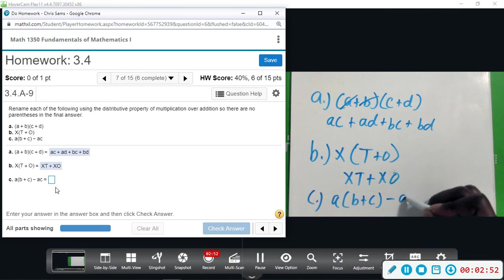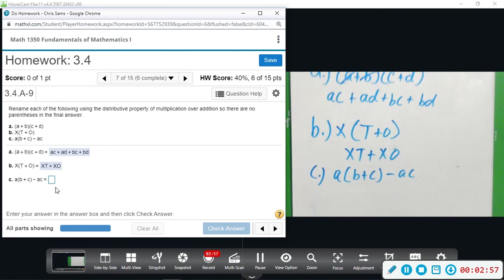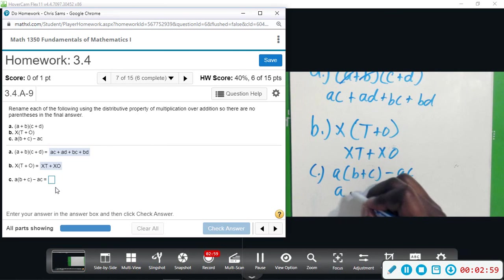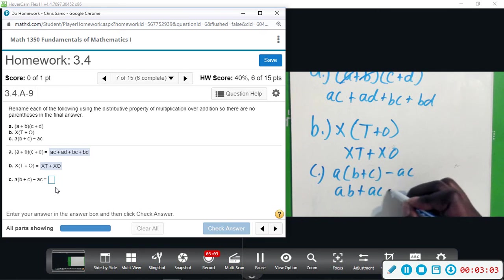Okay, so just distributing we'll get AB plus AC minus AC. Those would cancel out, but they just want us to distribute.